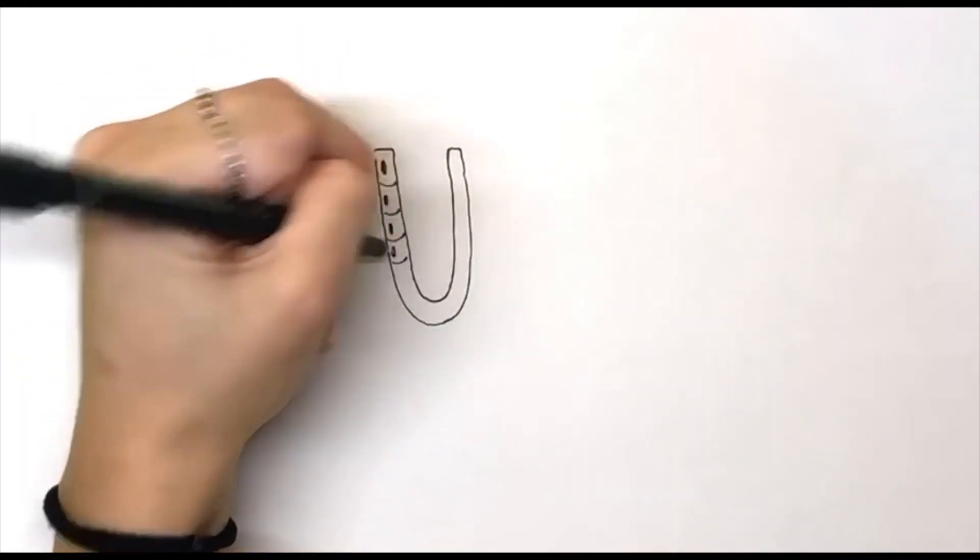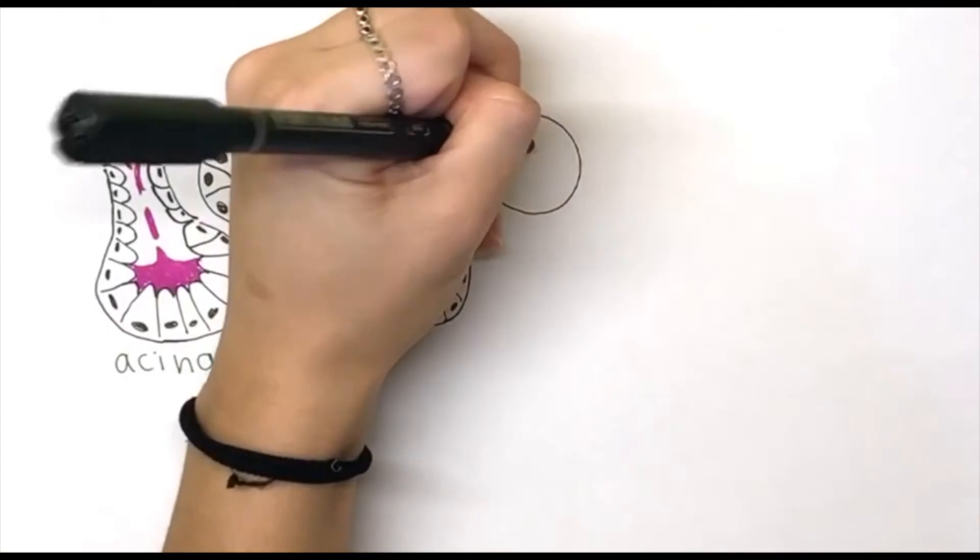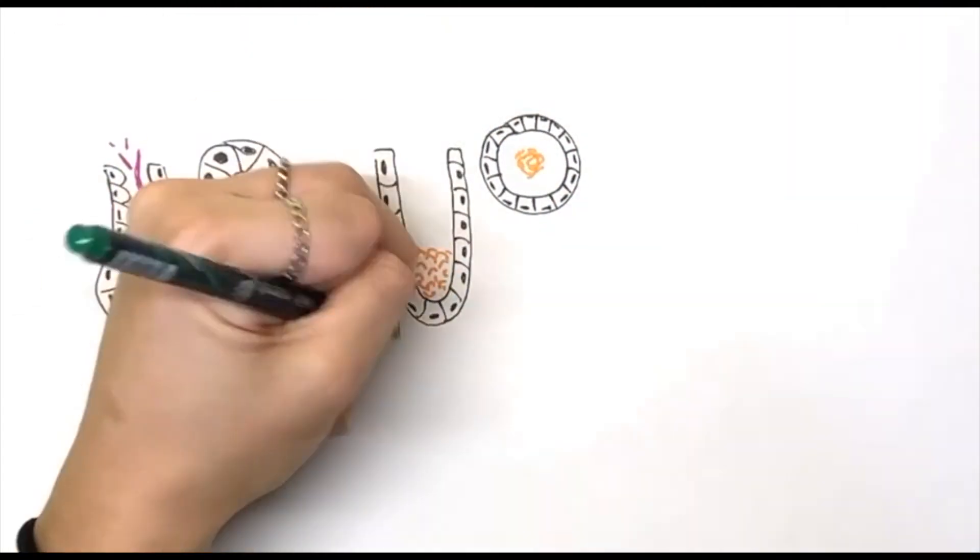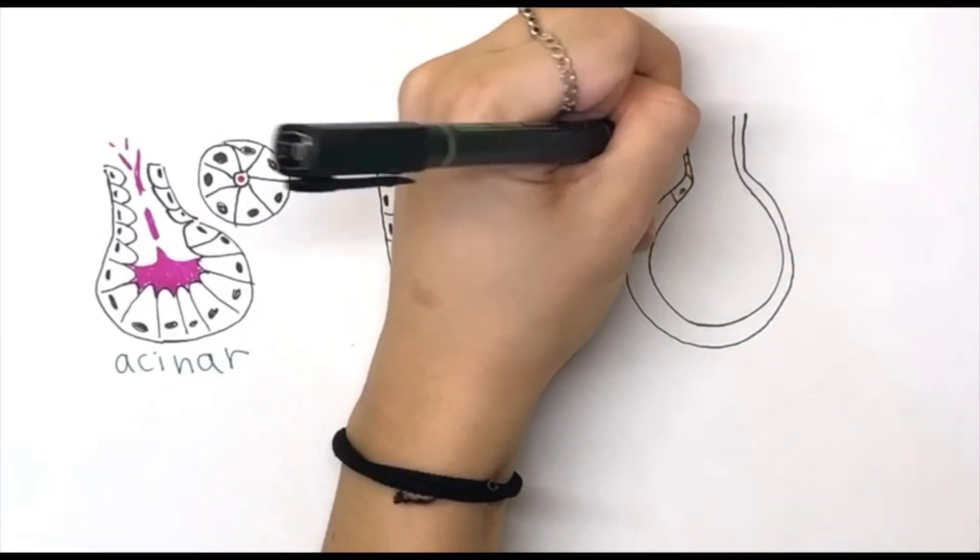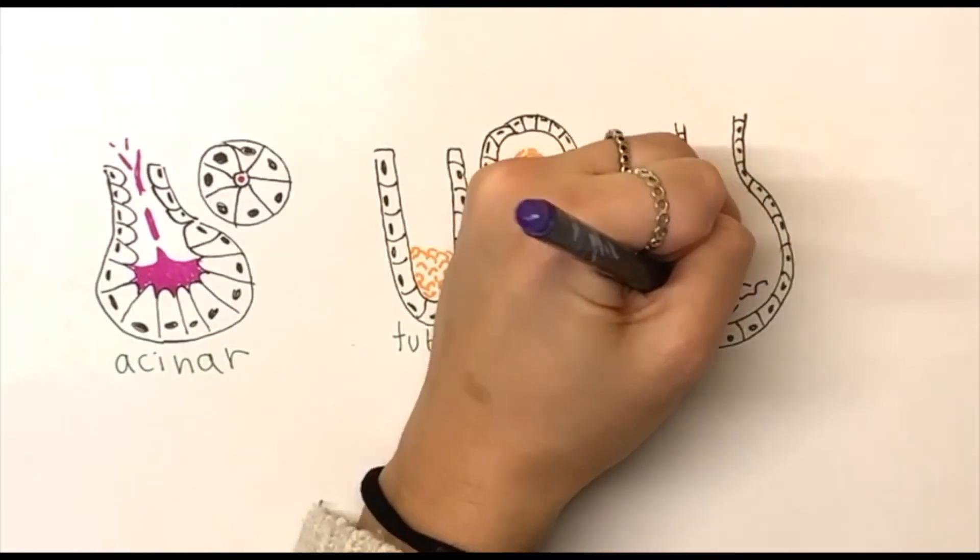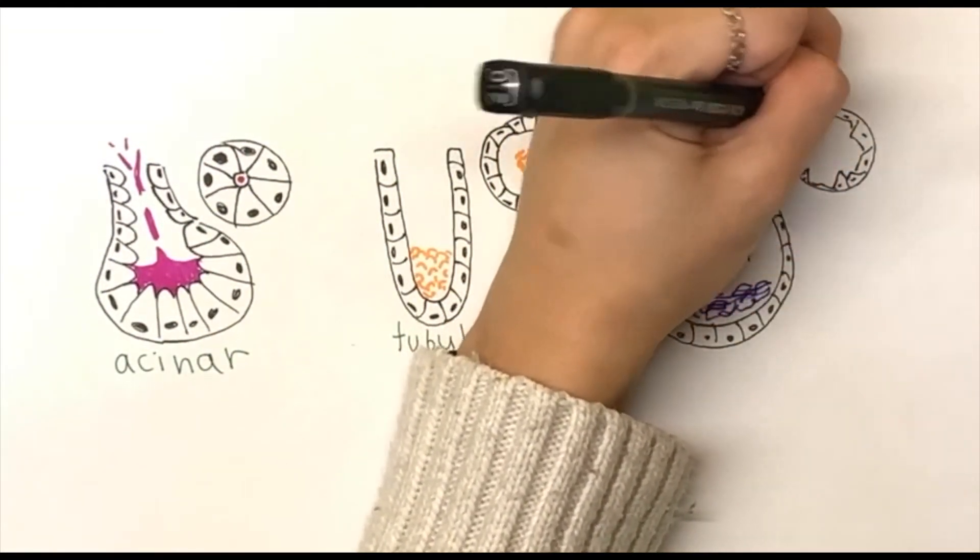A tubular secretory unit has a cylindrical shape formed by columnar cells. It has an evident lumen in cross-section and generally produces a glycoproteic fluid. The cells have flattened nucleus located in their basal domain and are filled with mucinogen storage granules in the apical side of the cytoplasm.